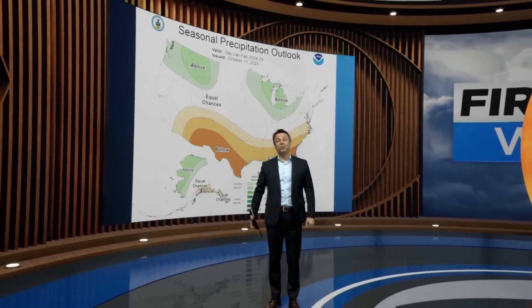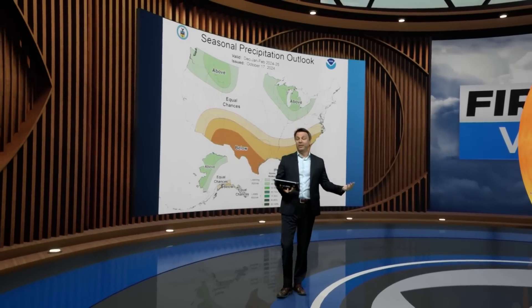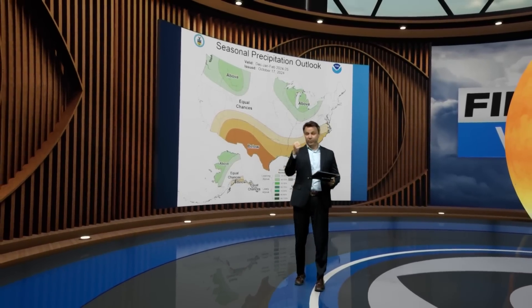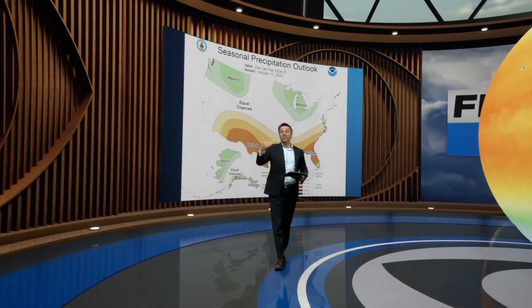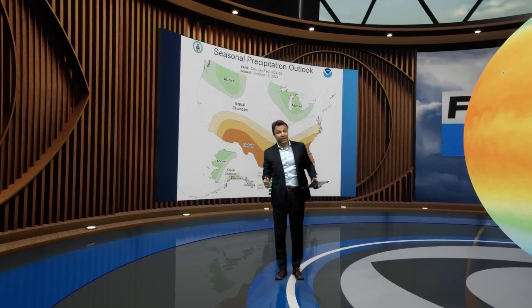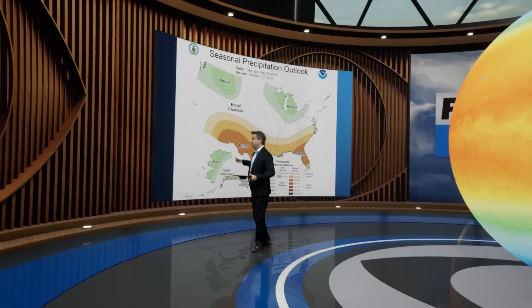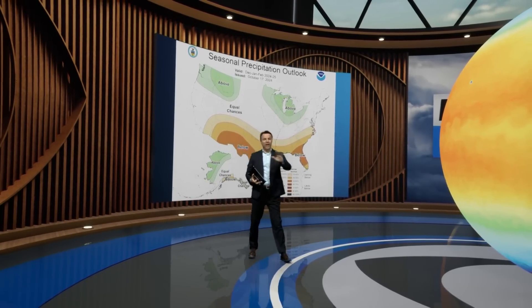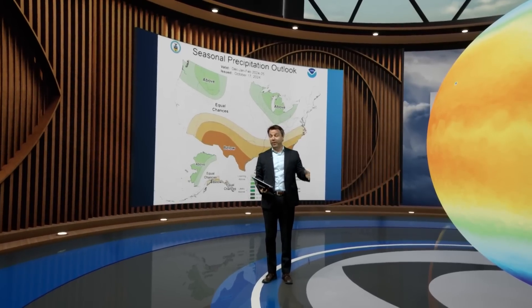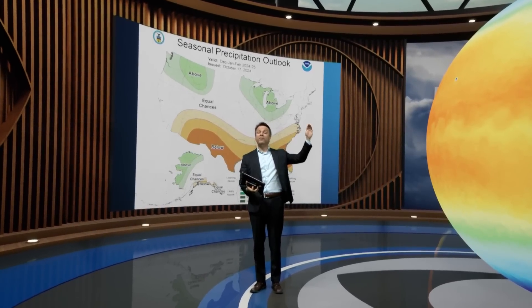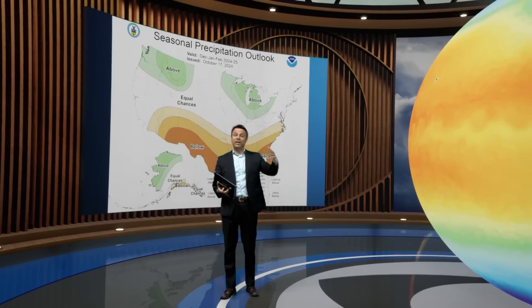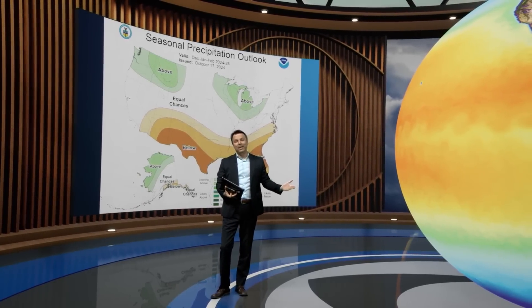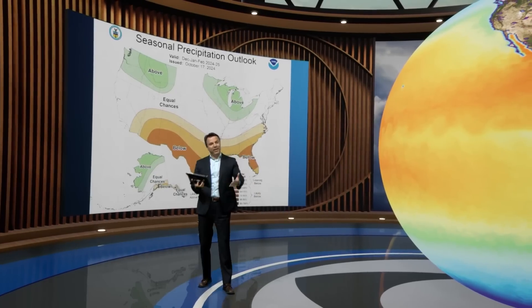That brings us back to 'equal chances.' This is what the Climate Prediction Center is saying for California for this winter — their forecast for December, January, and February. You could see a little above average rain in the Pacific Northwest, which fits the La Niña narrative, and it dries out the desert southwest. But for the majority of California, equal chances mean it could go either way. Each scenario gets a 33% chance: a 33% chance of above average winter, a 33% chance of below average, and a 33% chance of right on average.